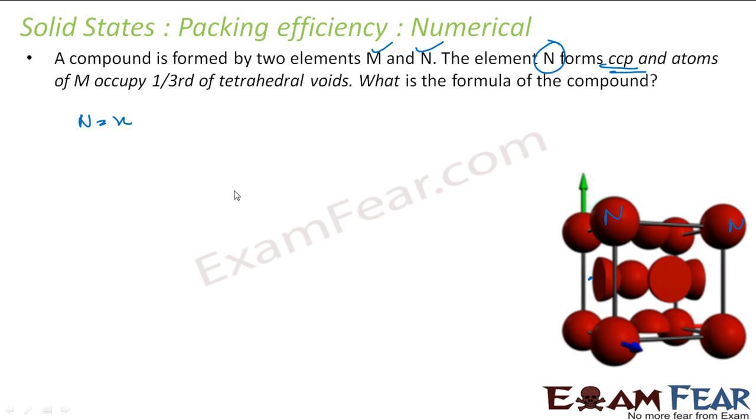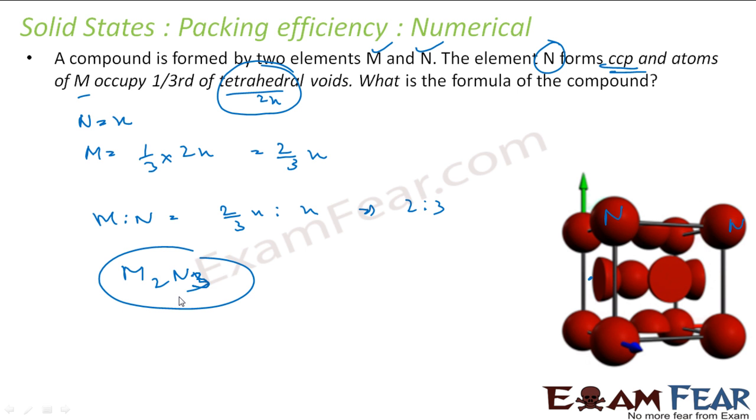See, if N = X, let's suppose, M will be one-third of tetrahedral voids. And tetrahedral void is 2X. We have seen that tetrahedral voids are double the number of atoms. So 1/3 × 2X = 2/3 X. That is the value of M. Find the M to N ratio: M is 2/3 X, N is X. That is 2:3. That means M₂N₃ is the formula.